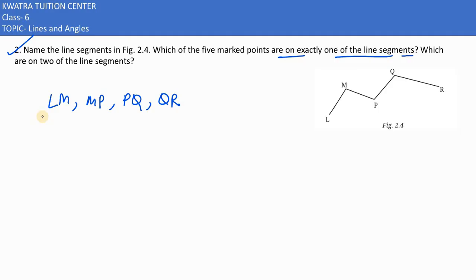One line segment should have two or three points. This is a line segment, and L is the endpoint of line segment LM, so L is one. Obviously QR is there—QR is the line segment and R is the endpoint, and one line segment exists. So this would be the answer: L and R exist on one line segment only. Second, we ask which are on two of the line segments.